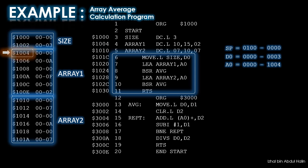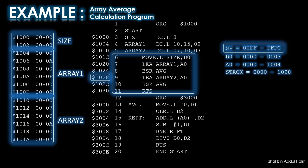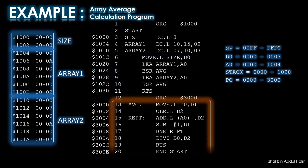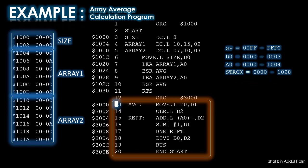Now for the interesting part. Line 8 is our subroutine call instruction, BSR AVG. Once executed, the next instruction's address, 1028, is pushed onto the stack, and the stack pointer is decremented by 4. We now have the subroutine's return address safely stored in the stack. The microprocessor then loads the address of AVG, which is 3000, into the program counter. This causes the program to branch to our subroutine.